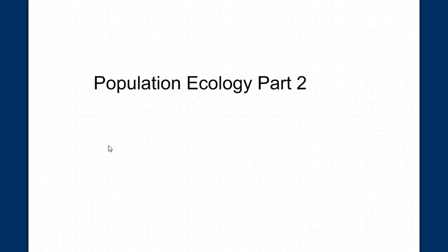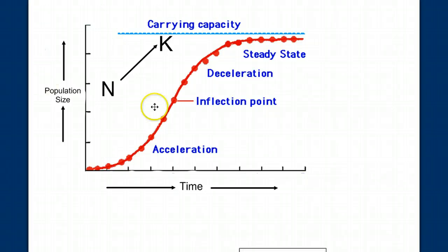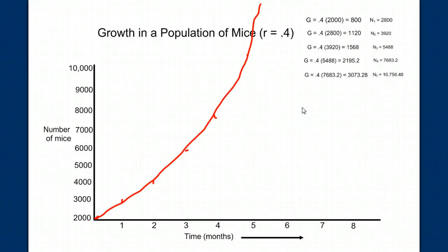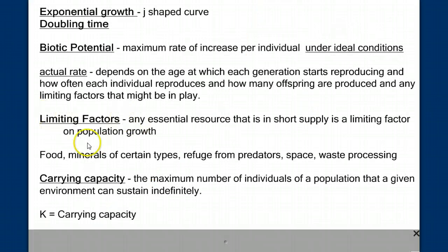This is part two in our series on population ecology. When we left our story, we had been talking about how populations grow and how we can model that mathematically. We saw that we can have an exponential growth curve if we just consider the intrinsic rate of growth — the birth rate minus the death rate — without considering limiting factors such as limited food, space, or the accumulation of waste over time that could limit how fast a population can grow.